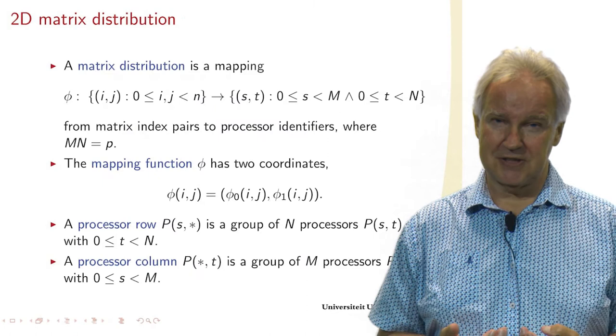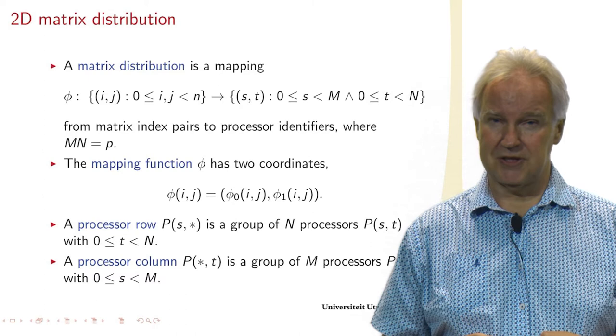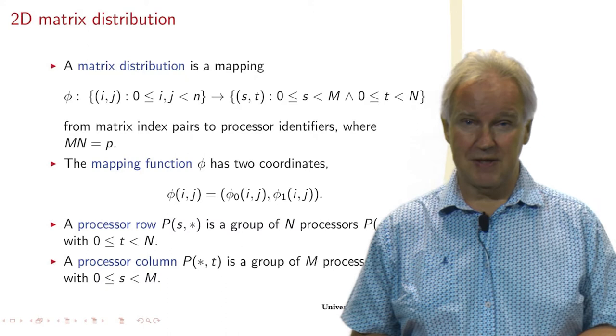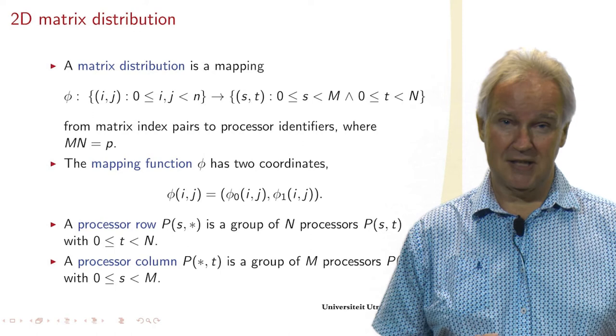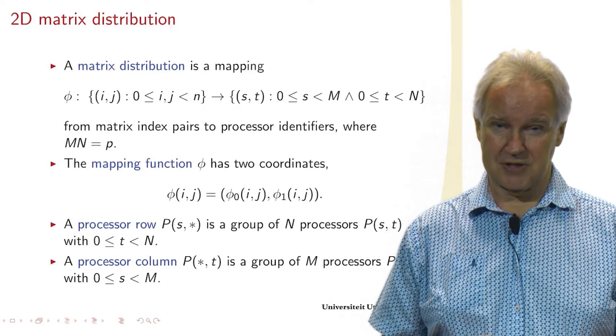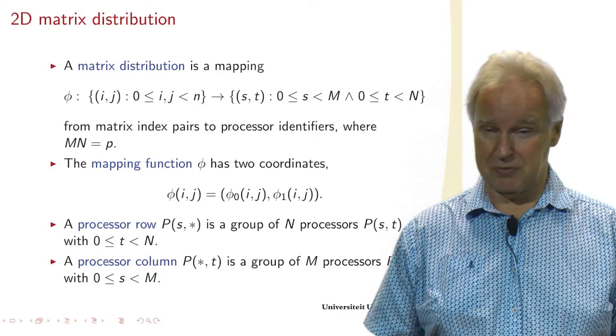Now we're going to decide on a data distribution and introduce a few formal definitions. So what is a matrix distribution? It's a mapping, a mapping phi from the set of elements of the matrix - the elements IJ, row I, column J - to the set of processors.